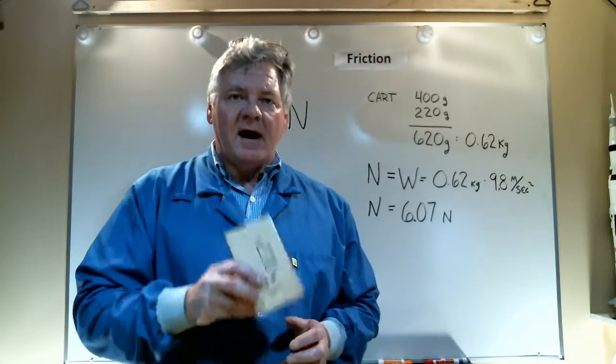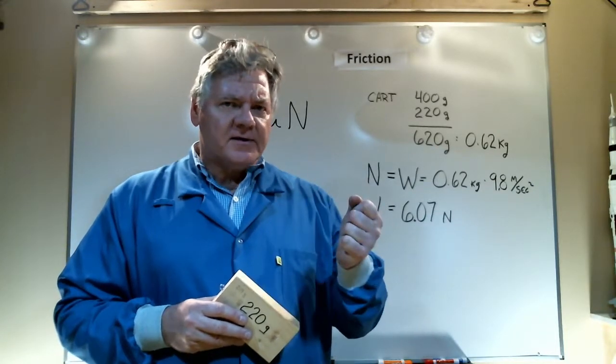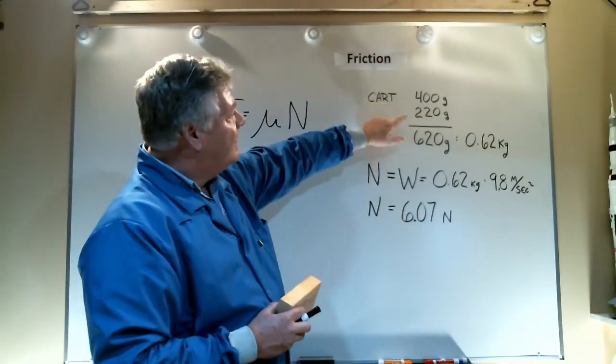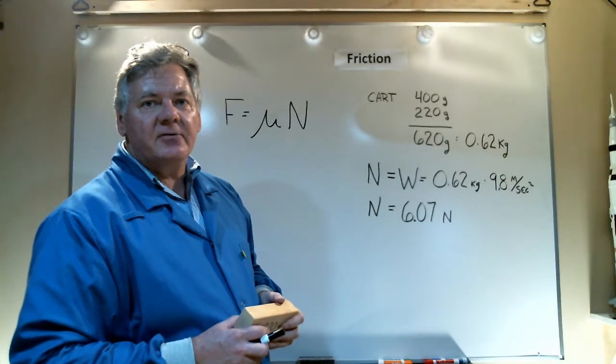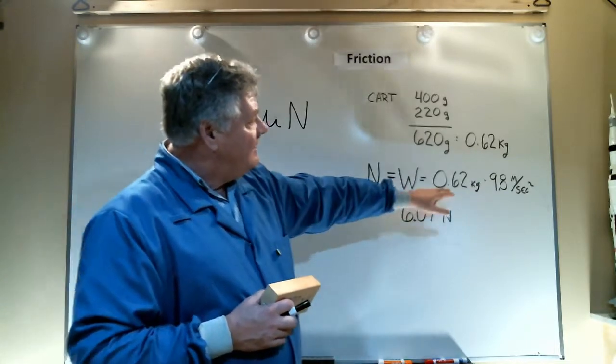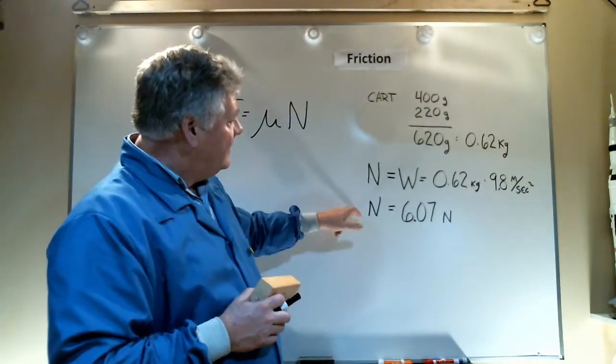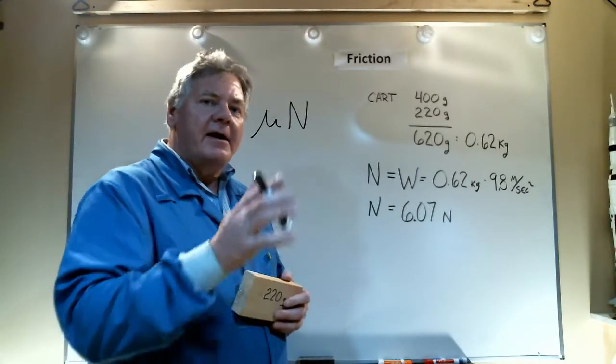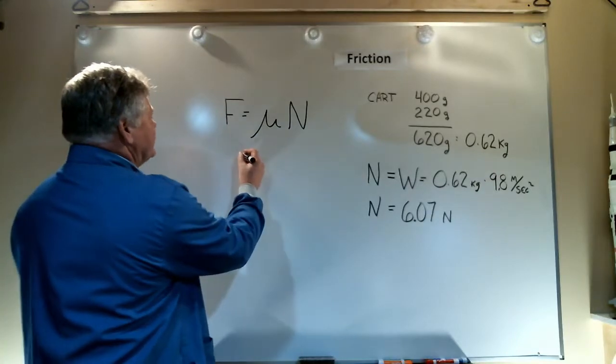Let's put that theory to test. I'm going to add a 220-gram block to my 400-gram cart and calculate the force that I think is necessary to break the static friction. My cart starts off at 400 grams. I add 220 grams to it for a total of 620 grams or 0.62 kilograms. I need the normal force or the weight of the cart plus the block, so I'm going to convert that to newtons by taking the mass, 0.62 kilograms, times the acceleration due to gravity, 9.8 meters per second squared, which gives an N of 6.07 newtons or 6.1 newtons.